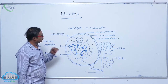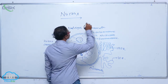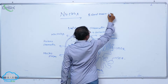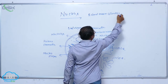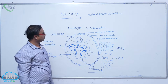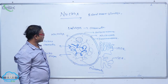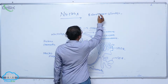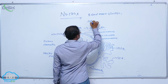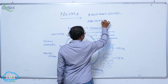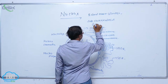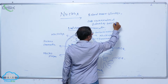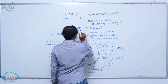The nucleus was first identified by scientist Robert Brown. This nuclear material is stained by basic dyes, and was therefore named 'chromatin' by scientist Waldeyer.